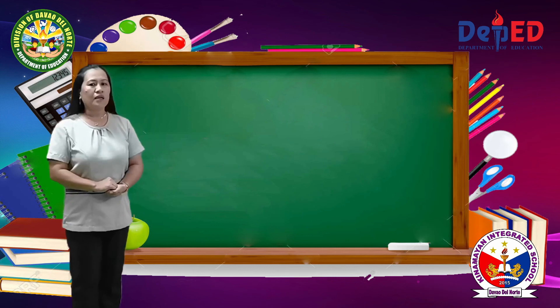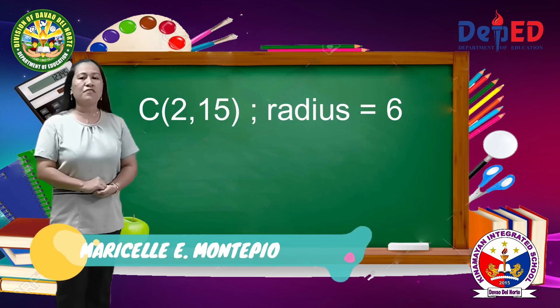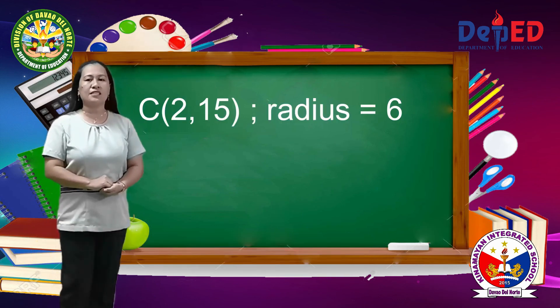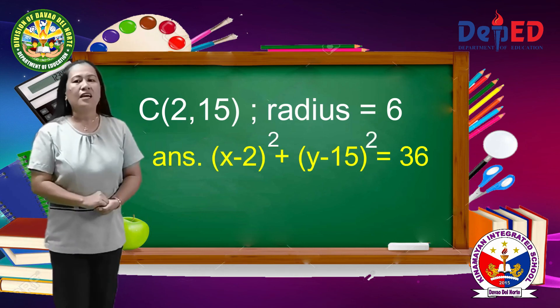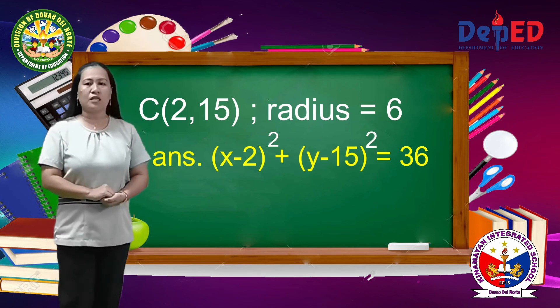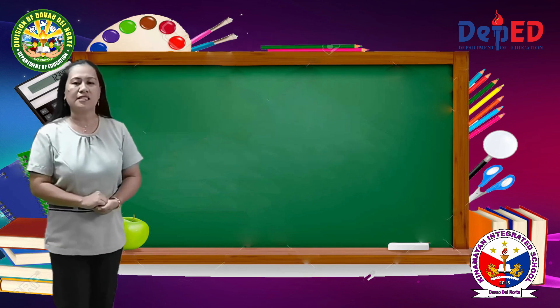Number 3: if the center is (2, 15) and the radius is 6, what is the equation? Correct! Quantity x minus 2 squared plus quantity y minus 15 squared equals 36.